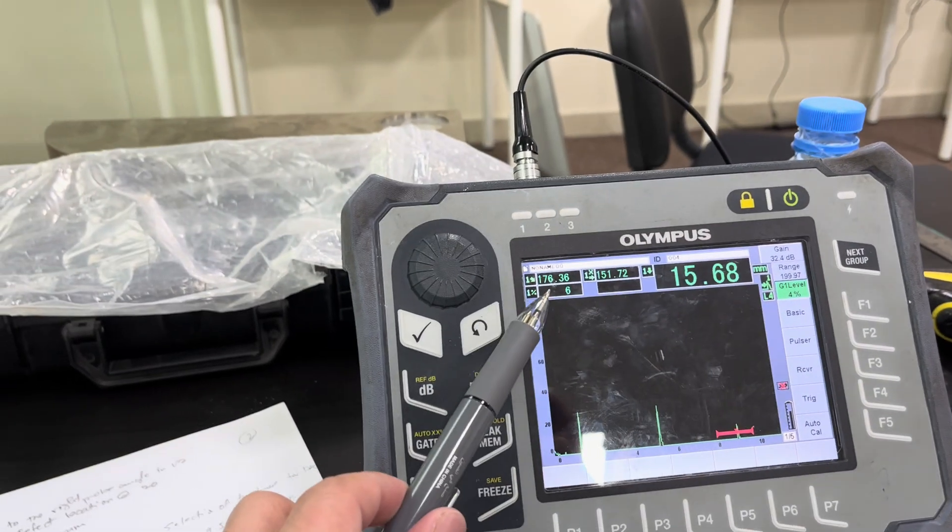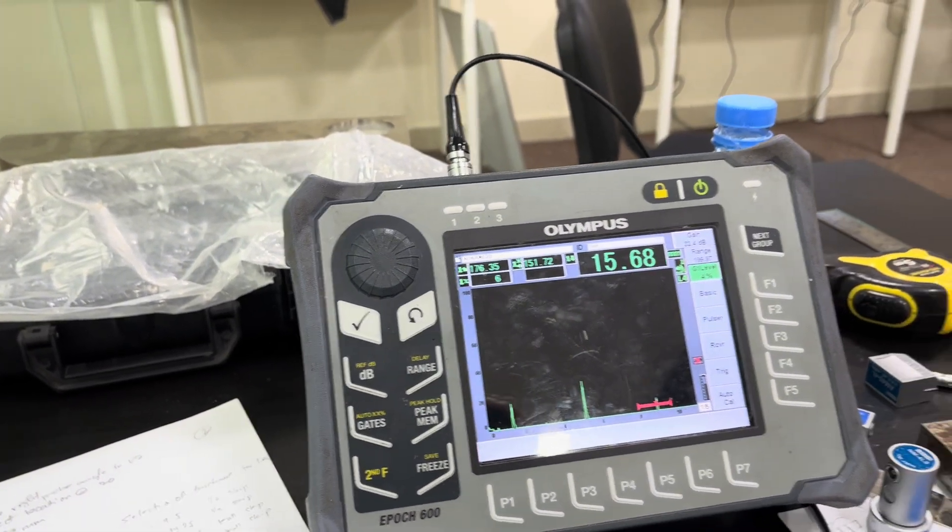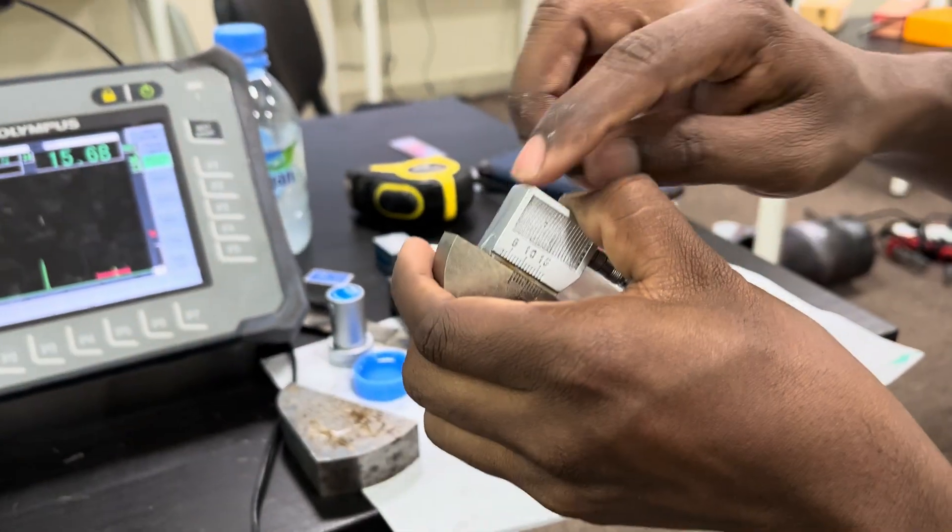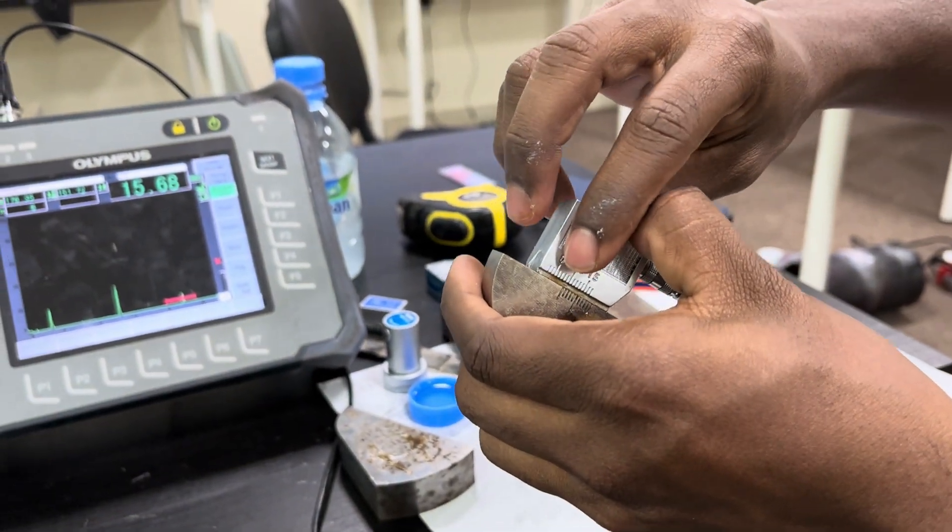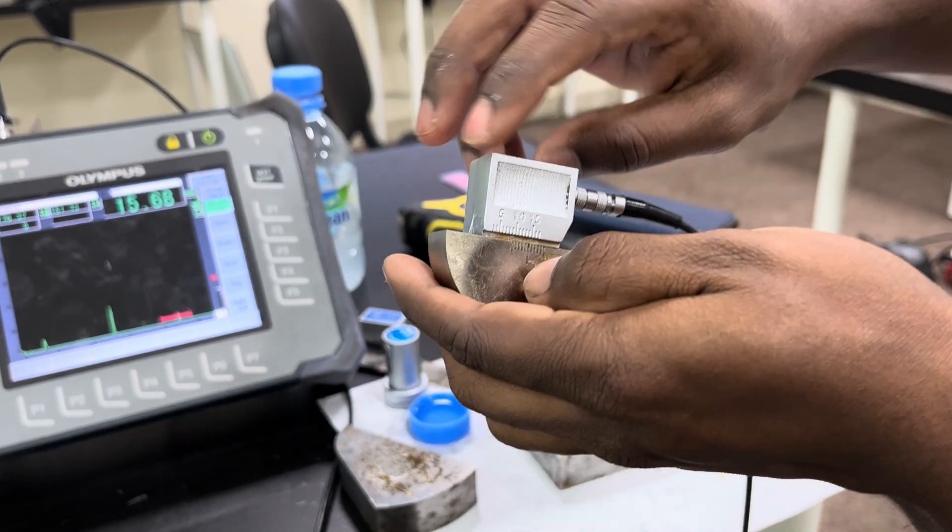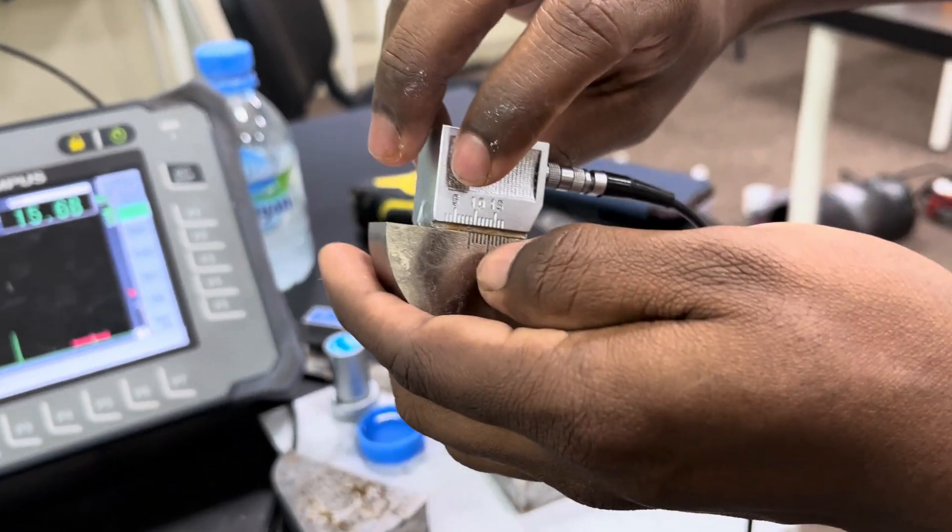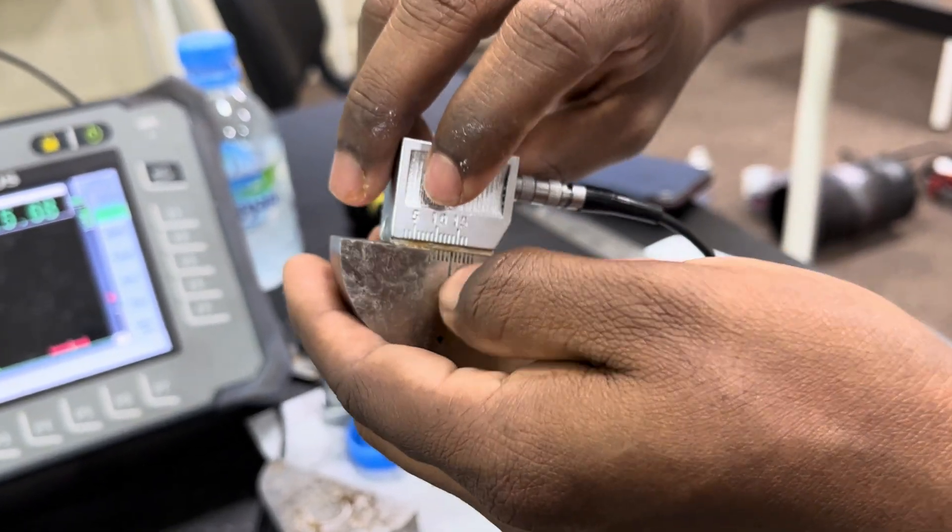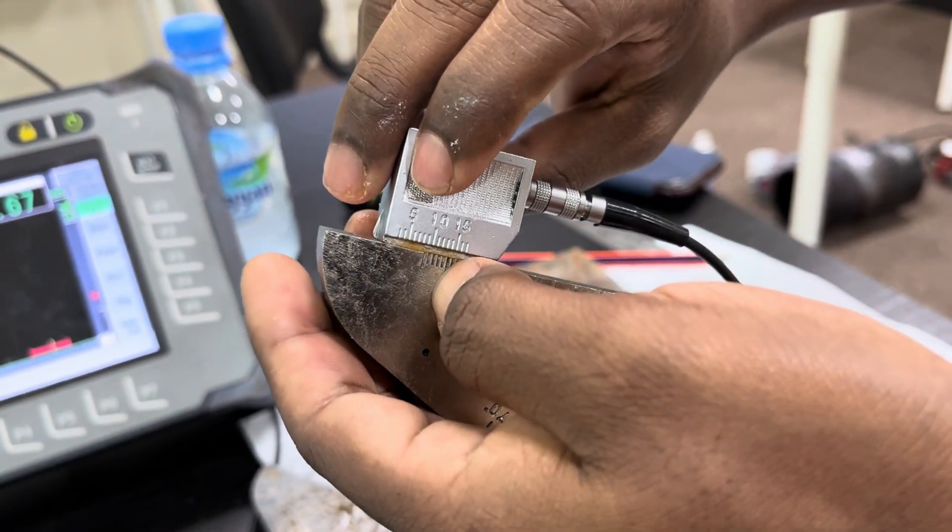It's coming at 176, so this one is also correct. Now, without changing the index value again, I am going to place the probe towards the 50R side, and I am going to match this 14 index value with the line of the V2 block.